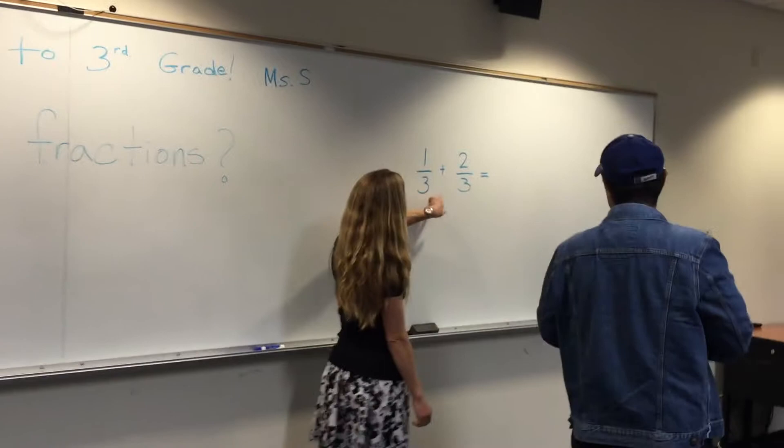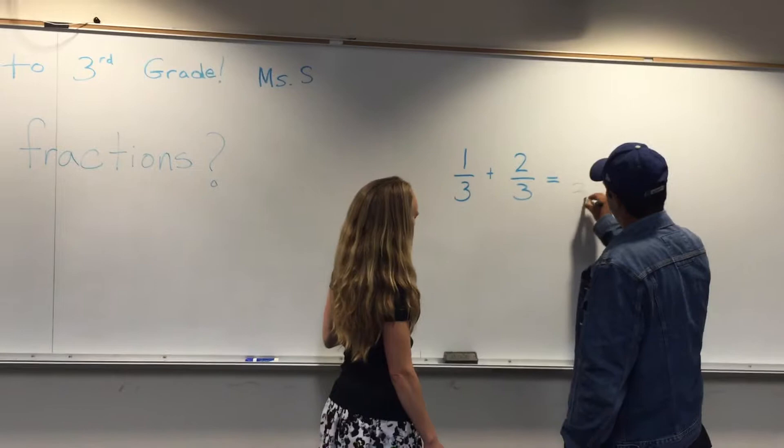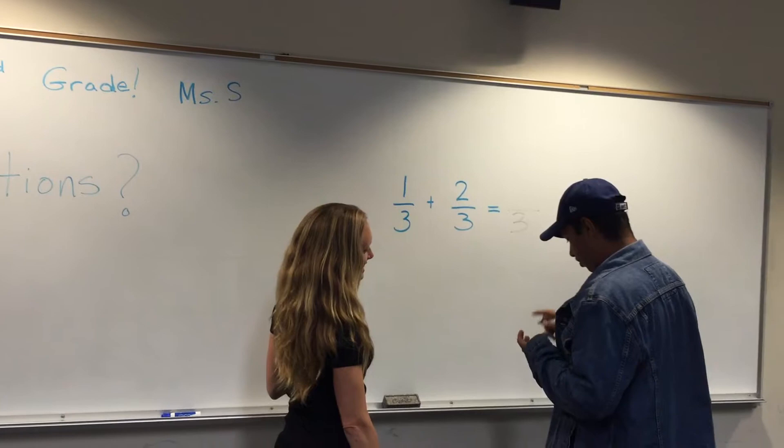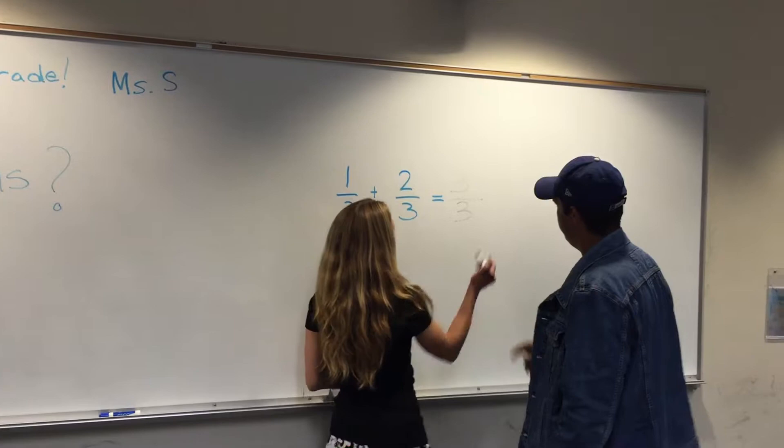For adding fractions, we keep our same denominator. So we are going to write three down here. That is our whole. And put the bar. That's our fraction bar. And then just simply add the numerator. One plus two is... Good. And three over three is one whole.